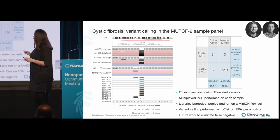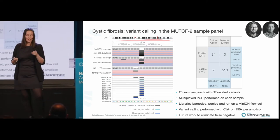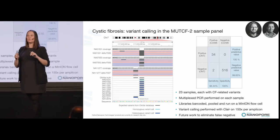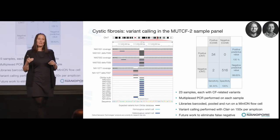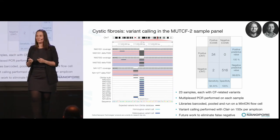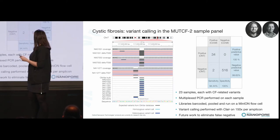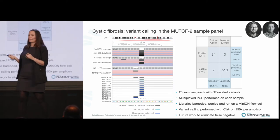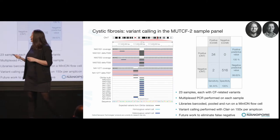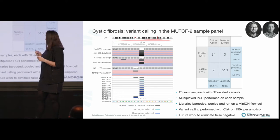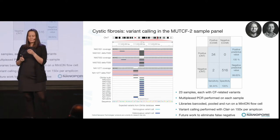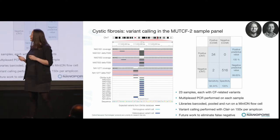We unfortunately have two false negatives and no false positives, which gets us to around 94% sensitivity and 100% specificity. These two false negatives are of course extremely annoying, but when we look at the alignments, we actually see them there, so I think it's a bioinformatics issue. We're calling with Clair, and there are a few parameters we can still adjust to get this right. We're quite confident this is going to be a good way forward for looking at cystic fibrosis.